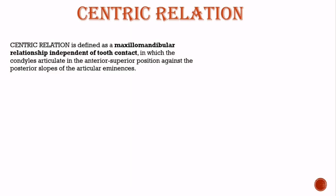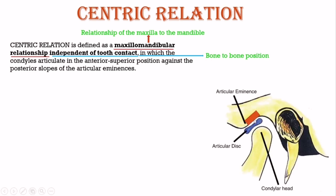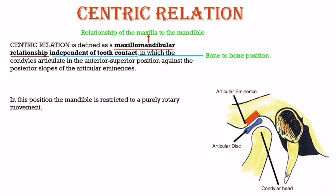So this was the definition of Centric Relation which is quite complicated. Now let's understand it in simple words. Centric Relation is defined as a maxillomandibular relationship — that is, relationship of the maxilla to the mandible — and it is independent of tooth contact, that is, it is a bone-to-bone position in which the condyles articulate in the anterior superior position, that is the front and top position, of the posterior slope of the articular eminences. In this position, the mandible is restricted to purely rotatory movement. By rotatory movement, it means that the body rotates about a fixed non-moving axis.